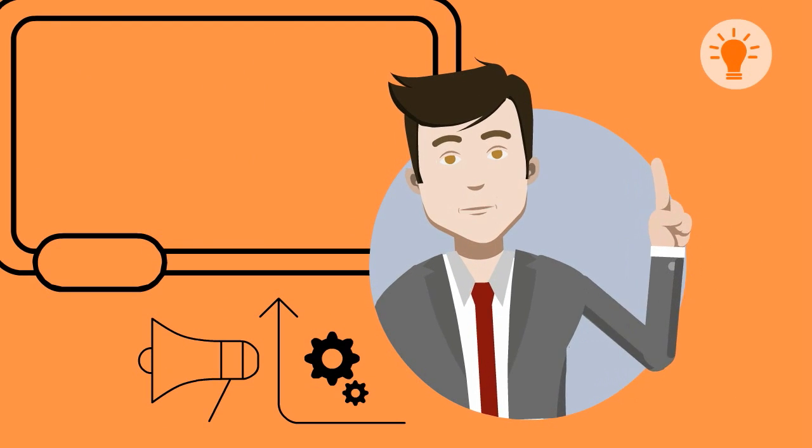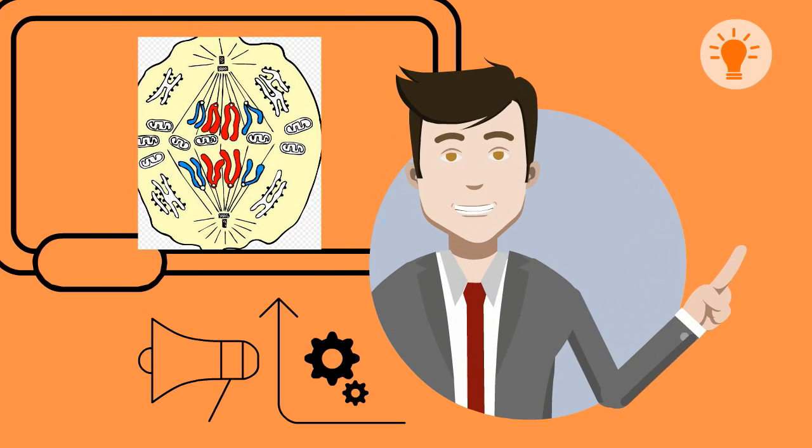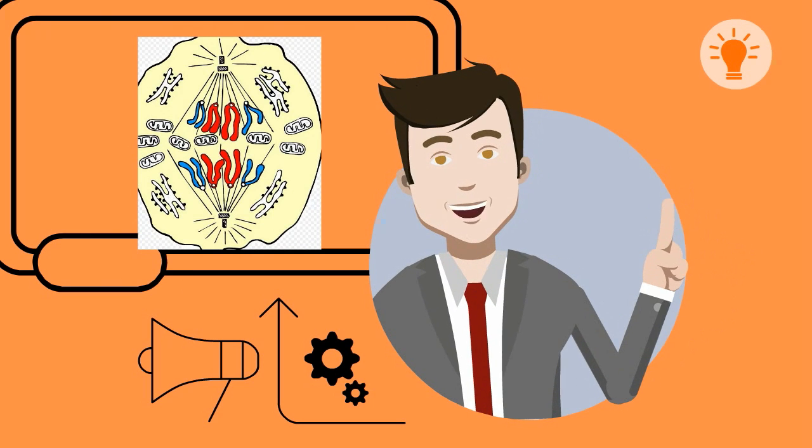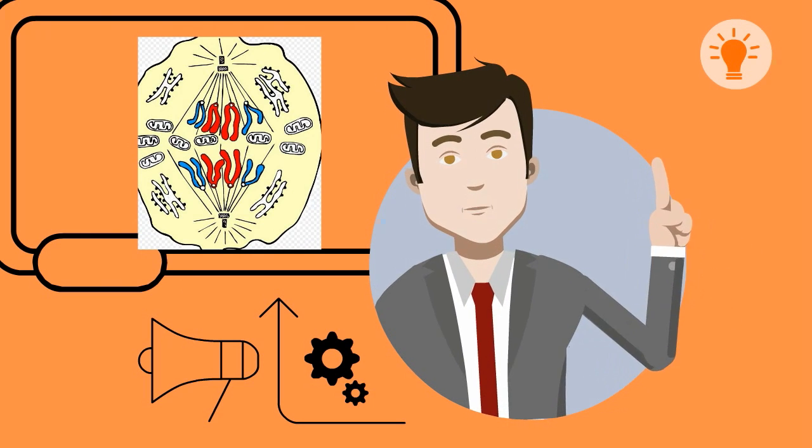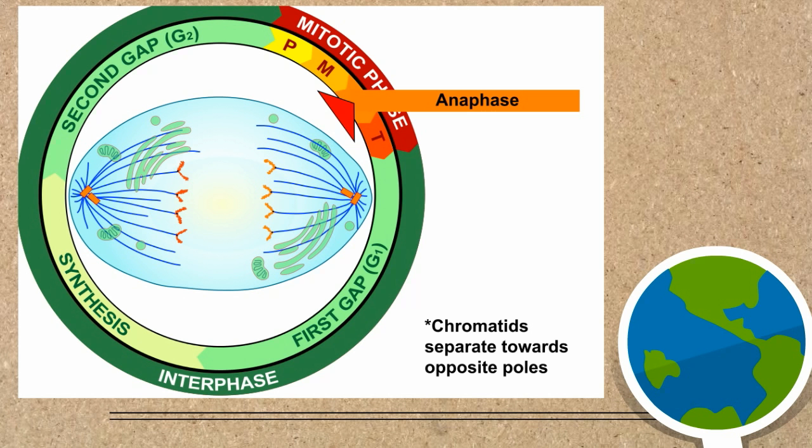Next, the chromosomes are attached to spindle fibers at the centromeres, more specifically at the kinetochore, and during anaphase they begin to pull towards the poles and separate the sister chromatids at the centromeres.